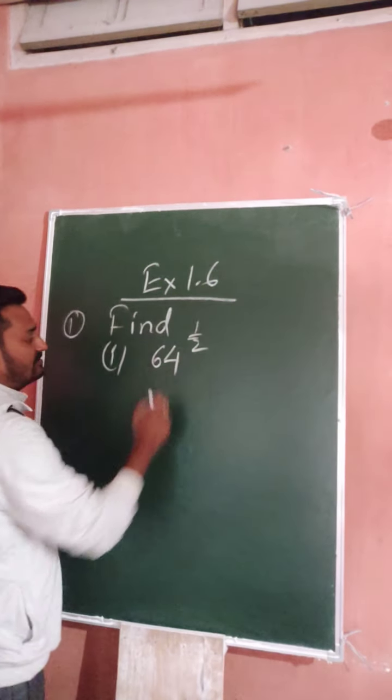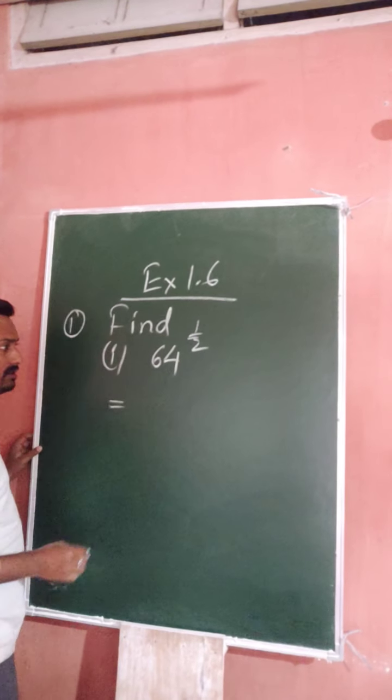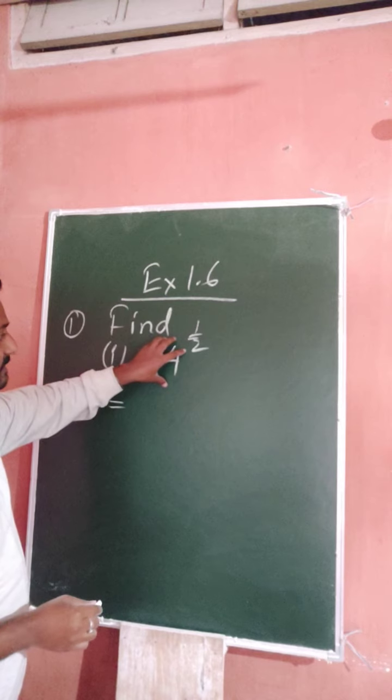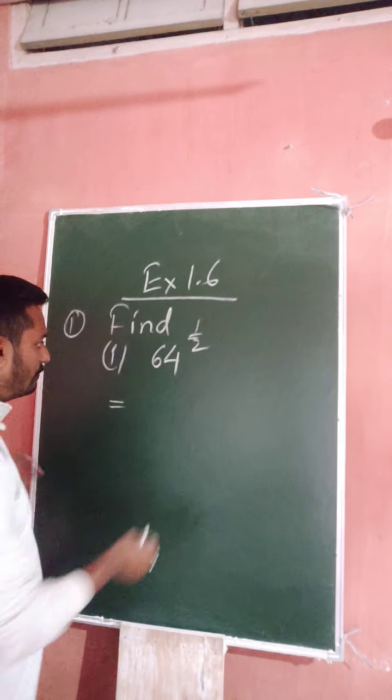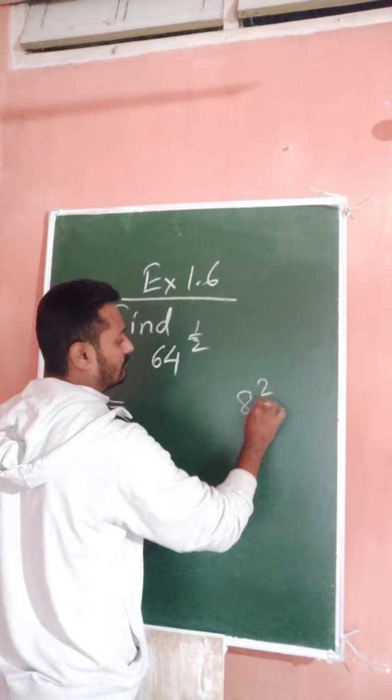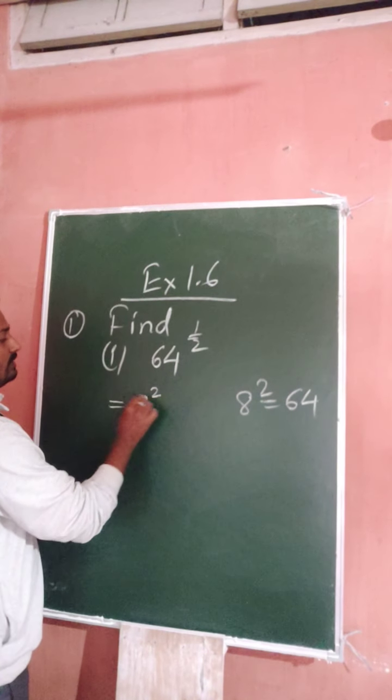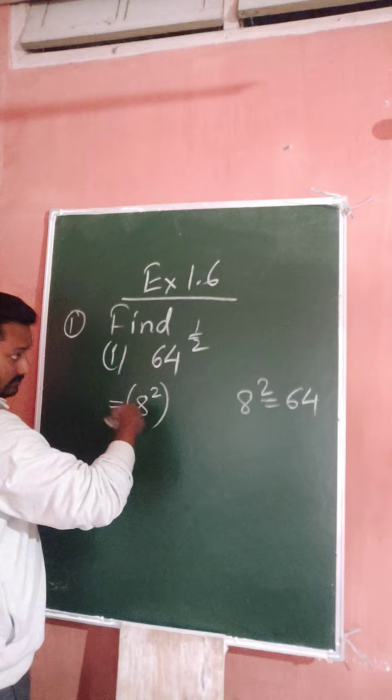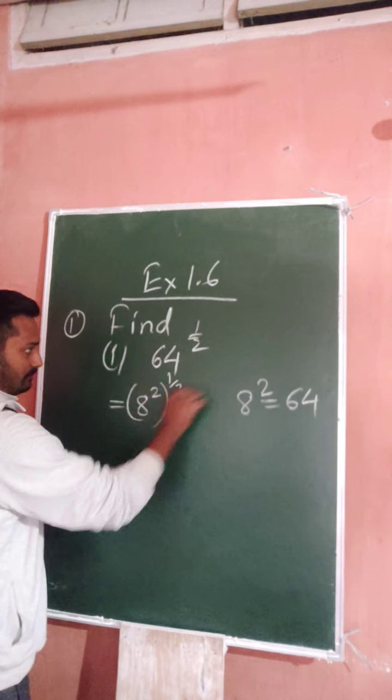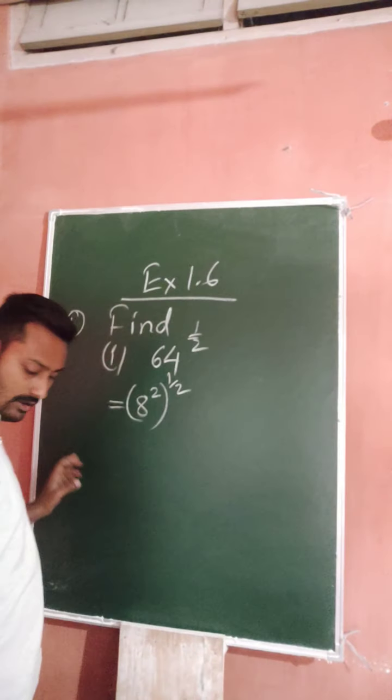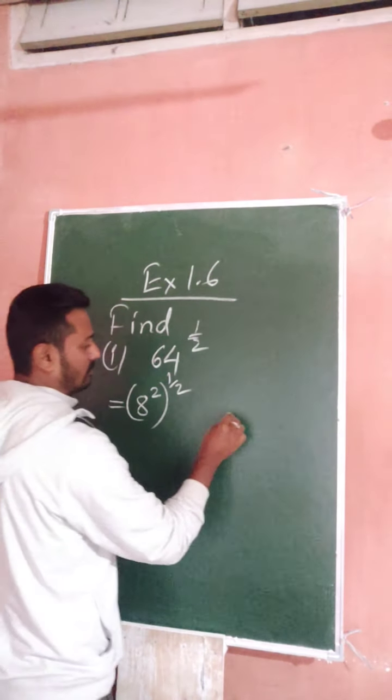In this case, look at the base. The base is 64, the power is one by two. So 64 is a number where the power is two. All of you know that 8 square is equal to 64, so instead of 64 you just write 8 square.